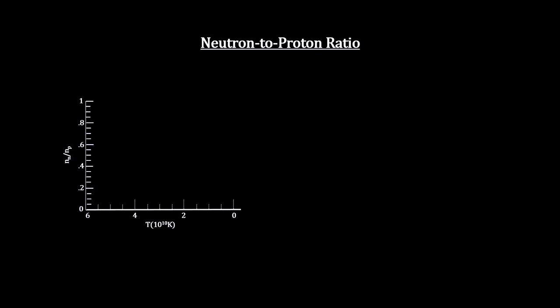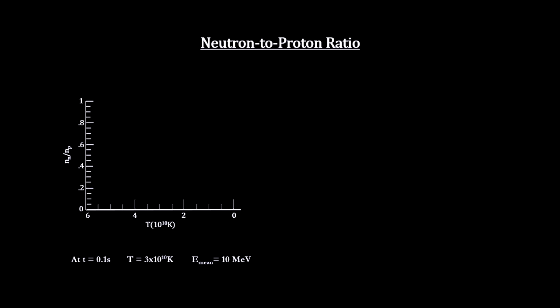Given the mass difference between neutrons and protons, we can calculate the expected ratio of neutrons to protons for any given temperature. Note that the number of neutrons decreases exponentially as the temperature cools.